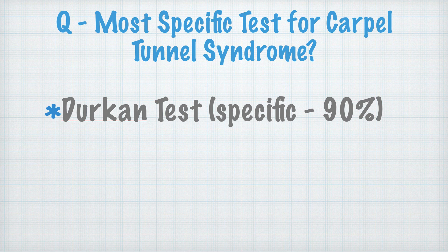The most specific test for carpal tunnel syndrome — two confusing options were the Phalen's test and the Durkan's test. The Durkan's test is more specific, at about 90% specificity for carpal tunnel syndrome.